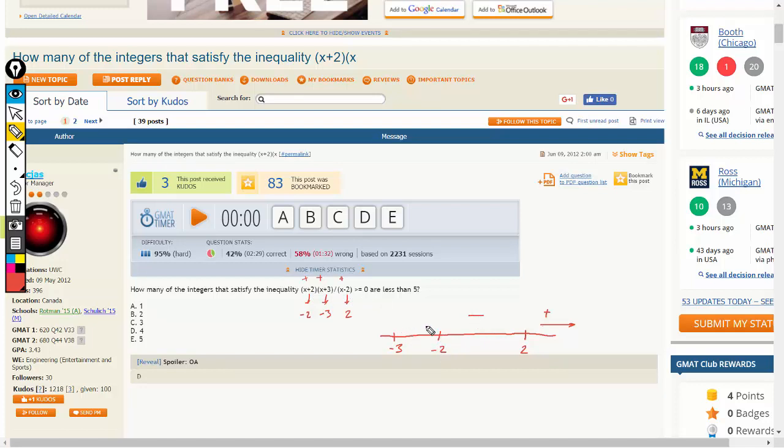Between negative 2 and negative 3, x plus 2 would become negative. So now two terms would be negative and one would be positive: negative, negative, positive. Effectively, we will have something positive.